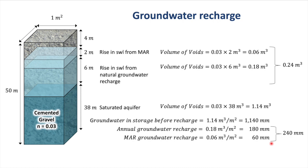So, we can estimate that the total groundwater recharge was 240 millimeters, and about 25% of this was due to groundwater recharge from the managed aquifer recharge scheme. The total groundwater in storage after the recharge event is about 1.38 cubic meters per square meter of aquifer.